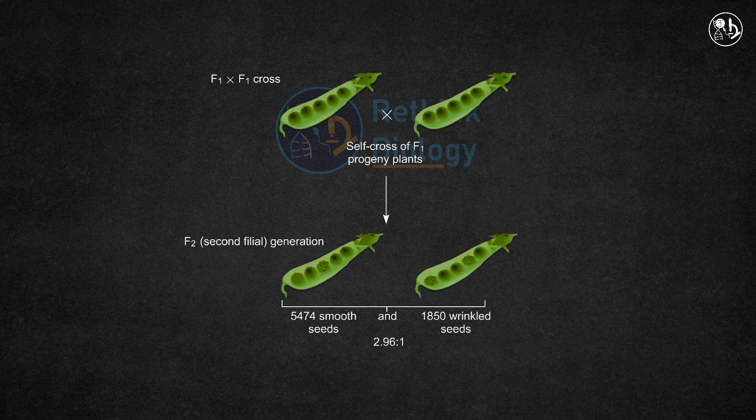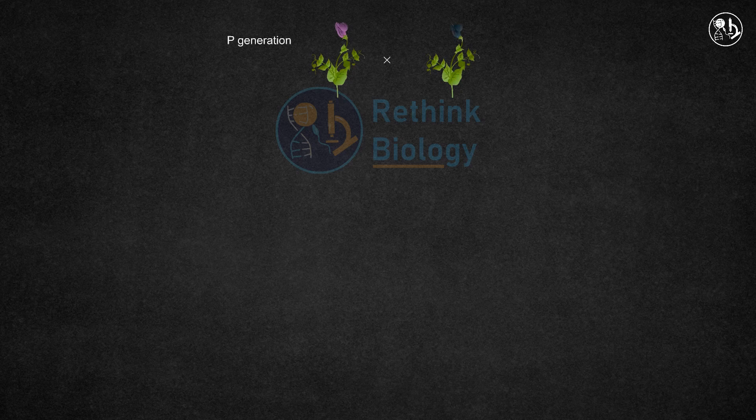Mendel observed this same result in many monohybrid crosses such as flower color and used math and statistics to develop a theory.